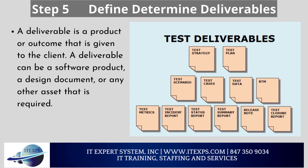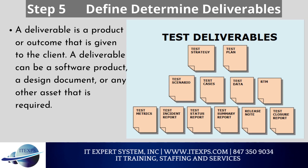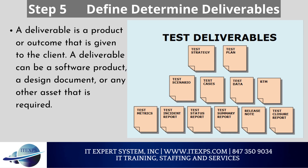Step 5: Define and determine deliverables. A deliverable is a product or outcome that is given to the client. A deliverable can be a software product, a design document, or any other asset that is required. Test deliverables are the artifacts produced by people involved in the process and given to stakeholders. Some deliverables are provided before the testing phase, some during the testing phase, and the rest after the testing cycle.